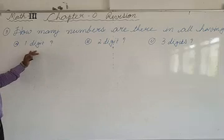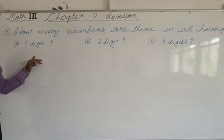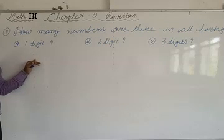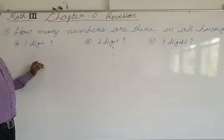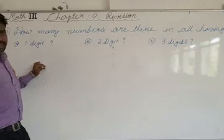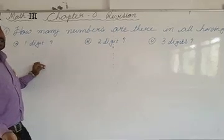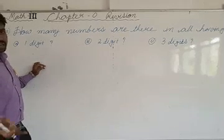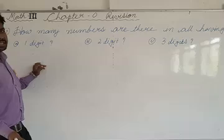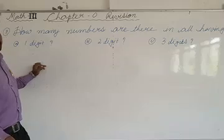How many total numbers are there of 1 digit? If it is asking about 1 digit, very simply, by counting you can say: starting from 1 — 1, 2, 3, 4, 5, 6, 7, 8, 9 — up to 9, there are 9 numbers.